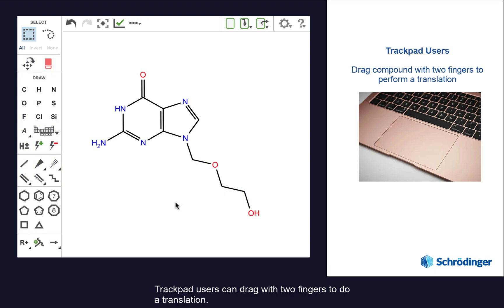Trackpad users can drag with two fingers to do the translation, and for any user, the move tool can be used to rotate the compound.